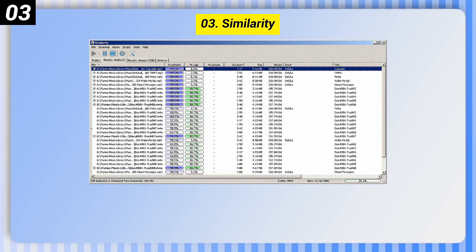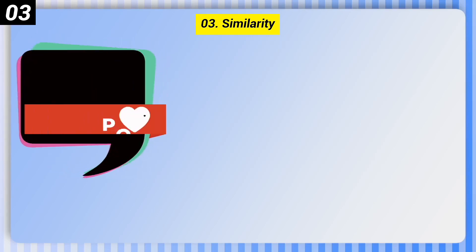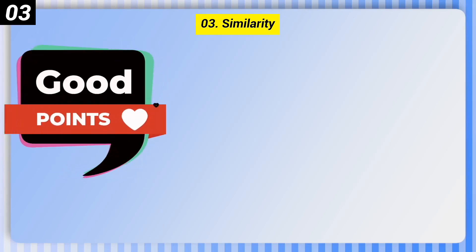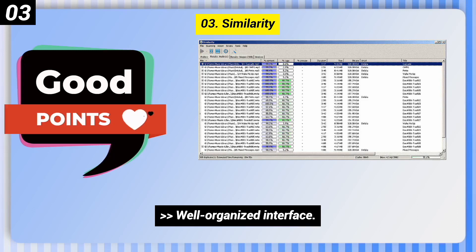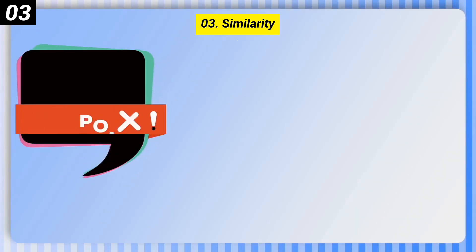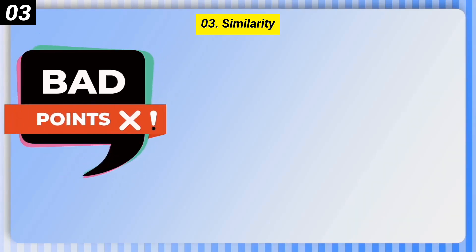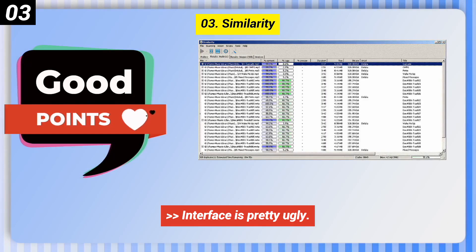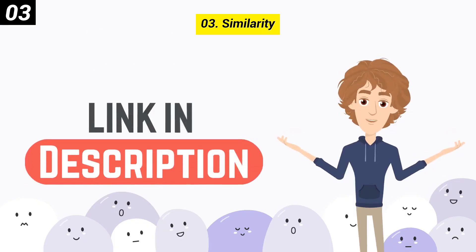Number 3: Similarity. Good points: well-organized interface, supports multiple formats, and compares based on the file content. Bad point: interface is pretty ugly. You can check out the link in the description box.